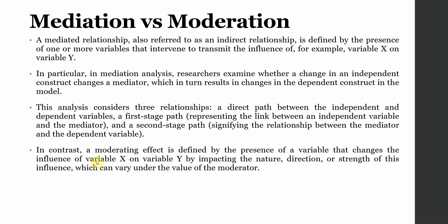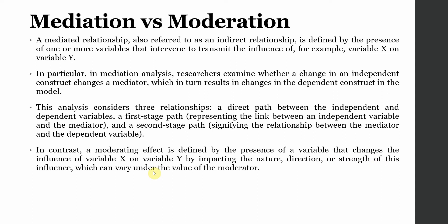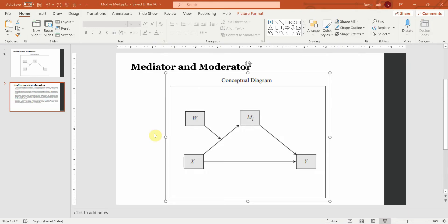In contrast, a moderating effect is defined by the presence of a variable that changes the influence of variable X on Y by impacting the nature, direction, or strength of the relationship. So here, W is a moderator that could strengthen or weaken this particular relationship, or it may altogether change the relationship from positive to negative or negative to positive. Now let's have a look at this in a more detailed manner.